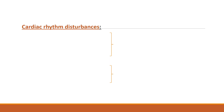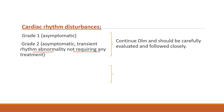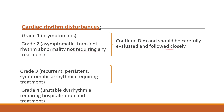What should you do when a patient on Delamanid develops a cardiac rhythm disturbance? For grade 1 and grade 2 — grade 1 being asymptomatic, grade 2 also asymptomatic with a transient rhythm abnormality not requiring treatment — you can continue Delamanid with close evaluation. However, for grade 3 and grade 4, which involve recurrent persistent symptomatic arrhythmia or unstable dysrhythmia requiring hospitalization, you stop Delamanid.